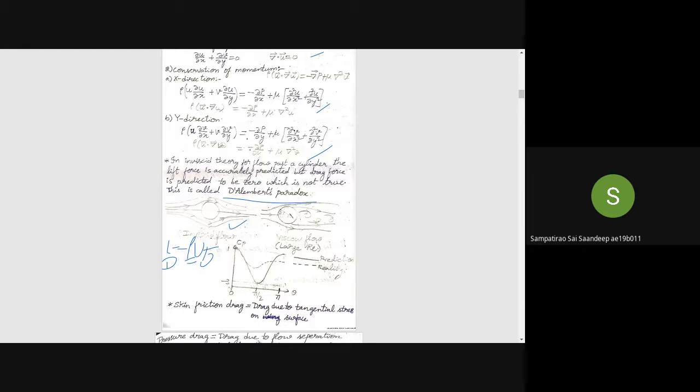For a viscous flow at large Reynolds number, there will be some vortices shedding out as shown here. Also, for this case, Γ is zero, so lift is also zero. But let's concentrate on the drag part here.